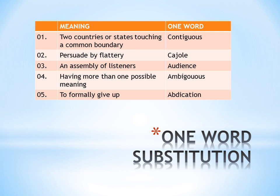First, we will start with one-word substitutions. The first is: two countries or states touching a common boundary. They are called contiguous. For example, UP and Bihar share a border, so we call them contiguous.